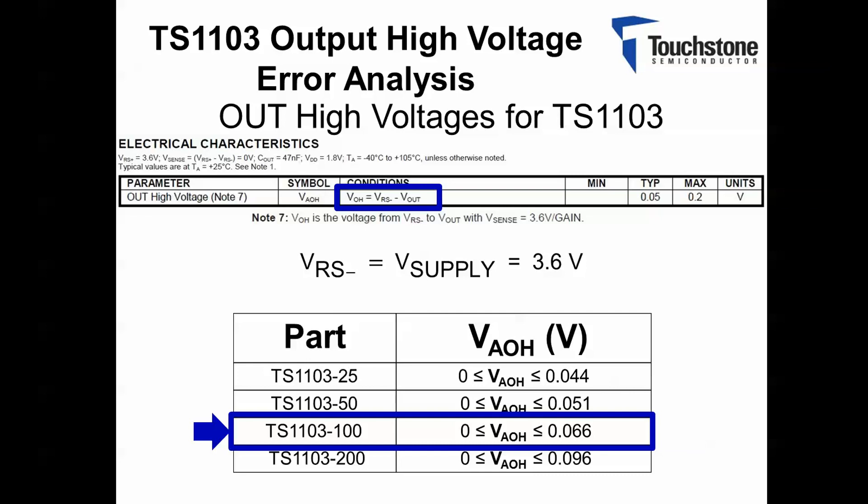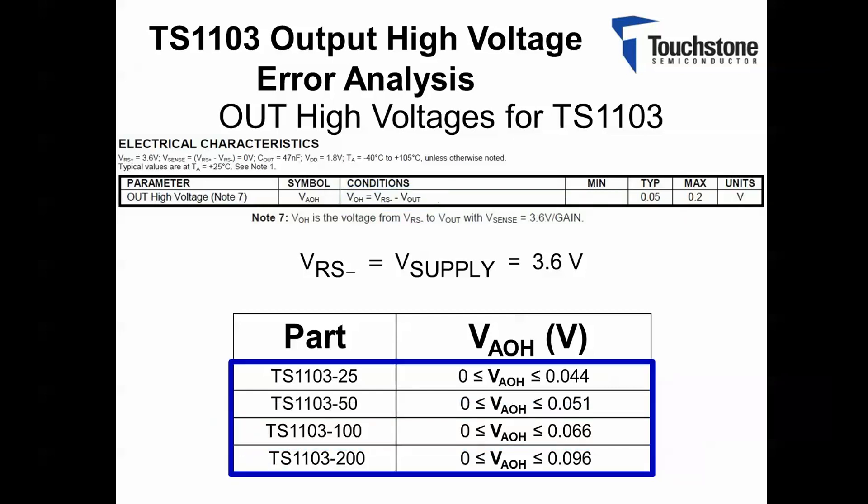Please note this calculation was performed specifically using the TS-1103-100 gain option. If you were to carry out the same calculations, considering the same errors, using a 3.6-volt power supply, and just varying the gain option for the TS-1103, these are the ranges over temperature that you can expect for the respective gain options.